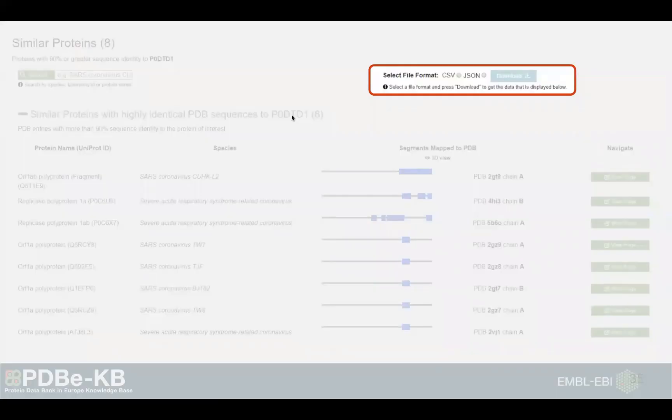One thing I would like to highlight is that you can not only download the coordinates like you've seen previously, but you can also get all the other data that we are showing. All the annotations, all the ranges, all the text, everything. In both CSV and JSON format for all the different sections. You can grab the data and perform any kind of analysis.